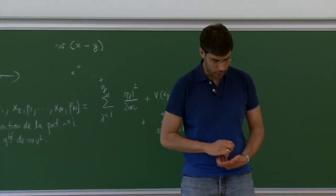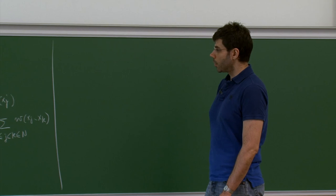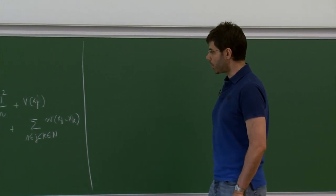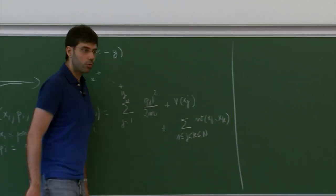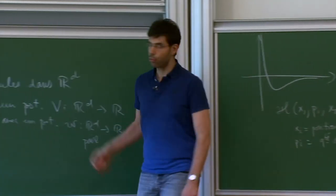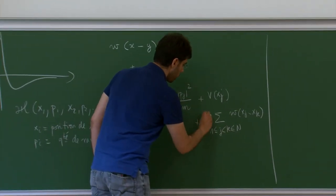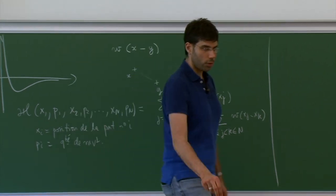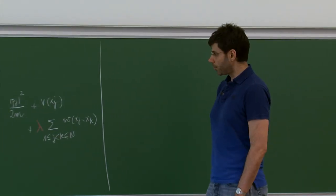To place ourselves in the mean-field regime, we add what physicists call a coupling constant. That is, instead of having a potential W, we have a potential λ times W, where λ is a real number and we act on λ.